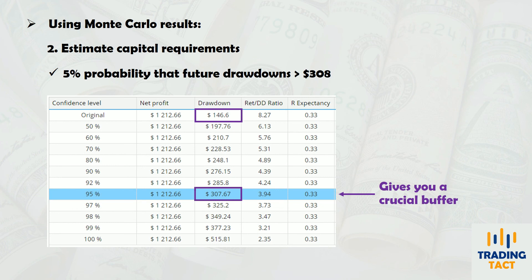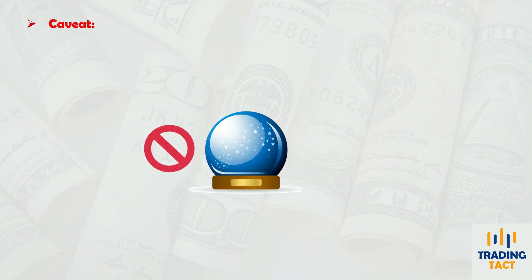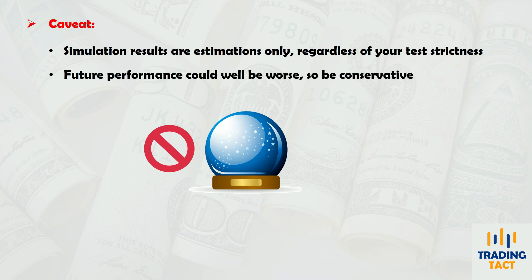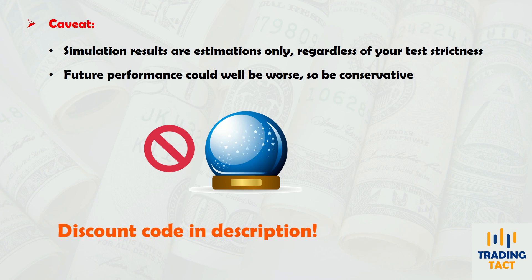So Monte Carlo simulations quickly simulate multiple backtest outcomes, giving you a conservative estimate of your strategy's robustness and capital requirements. Regardless of how many simulations you run, or which confidence level you select, remember that your results are estimations only. Future market conditions could well be worse than what was captured in your backtest. If you would like to try out StrategyQuant's Monte Carlo simulator, be sure to use the discount code in the description.